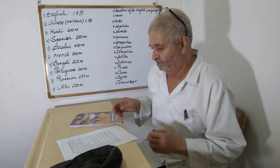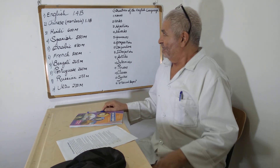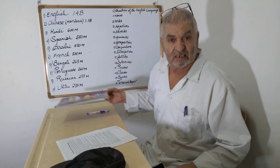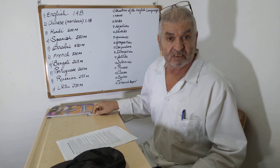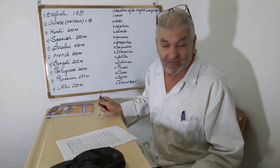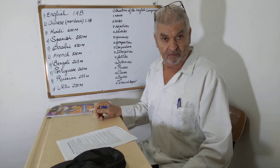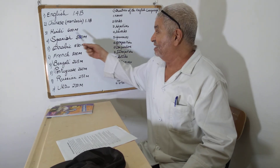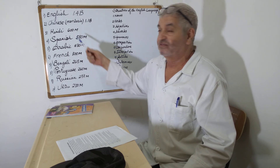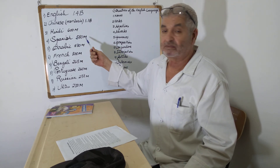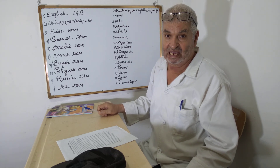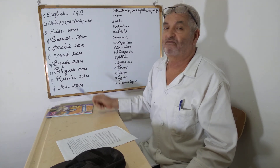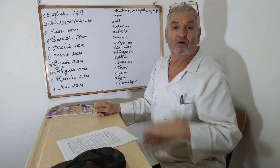Welcome to 'Languages and the World.' The most spoken languages around the world: English comes in at number one with 1.4 billion people speaking it, then Chinese with 1.1 billion, Hindi in India with 600 million, Spanish with 580 million, and Arabic — beautiful Arabic — with 430 million speakers, the language of the Quran.